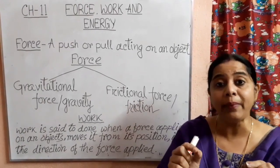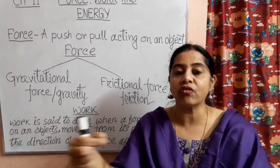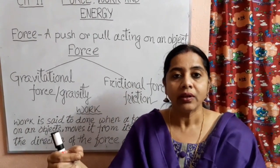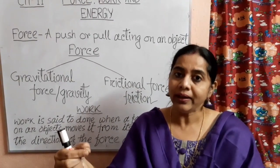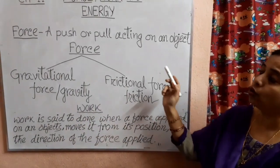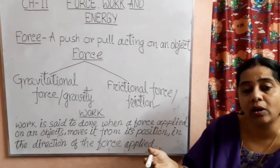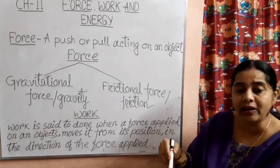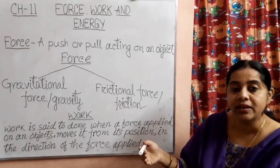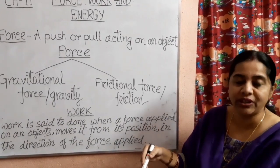When you take a rubber band and apply force, it stretches — its shape is changed. So students, force can do many things: force can make an object move, it can stop an object, it can change the direction of objects, and it can also change the shape of an object.